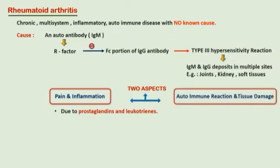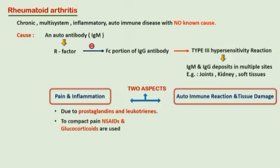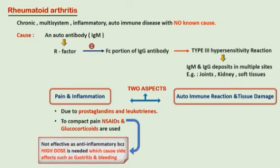The disease-modifying anti-rheumatoid drugs slow the progression of this disease, but they act very slowly. These disease-modifying anti-rheumatoid arthritis drugs take 6 weeks to 6 months to treat rheumatoid arthritis.